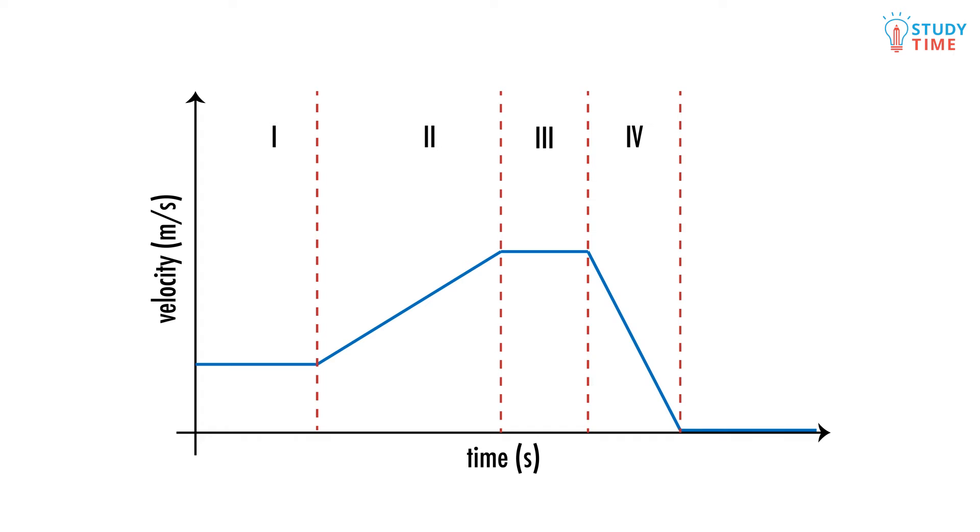One of the first things that's good to ask is, how can we describe the motion? If we look at stage 1, our skier Holly is moving at a constant velocity. Each second she'll cover the same distance.